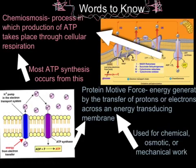Hi, everyone. Two key terms are chemoosmosis and proton motive force. To be able to relate the two words, we need to understand them. The first word is chemoosmosis. It is the process in which production of ATP takes place through cellular respiration. Most ATP synthesis occurs from this.